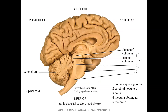Going into more detail: the corpora quadrigemini has four nuclei — the two superior colliculi, responsible for visual stimulation and eye, head, and neck movements, and the two inferior colliculi, responsible for auditory reflexes resulting in head and trunk movements. The cerebral peduncle is number two. Number three is the pons, and number four is the medulla oblongata.